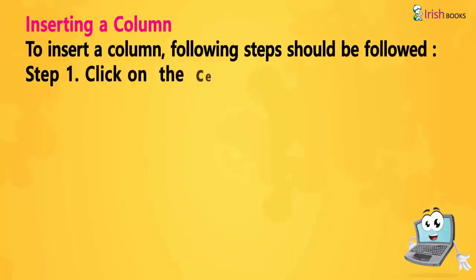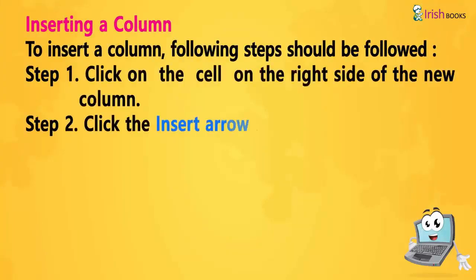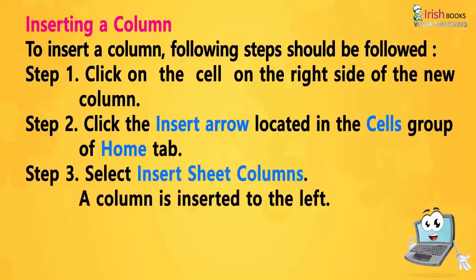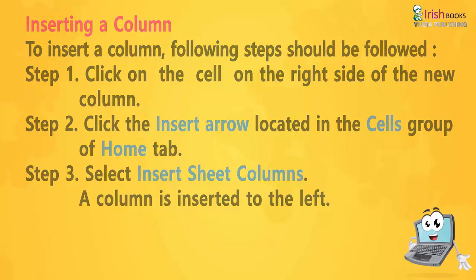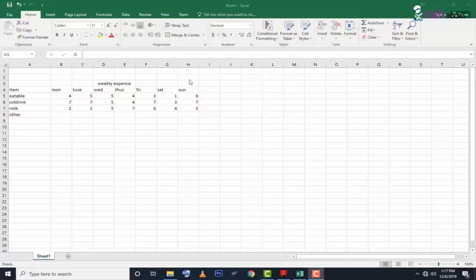Inserting a column: To insert a column, following steps should be followed. Step 1: Click on the cell on the right side of where you want the new column. Step 2: Click the insert arrow in the cells group of the Home tab. Step 3: Select 'Insert Sheet Columns'. A column is inserted to the left.